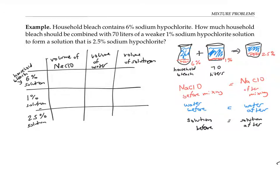Let me see which of these boxes I can actually fill in. I know that I'm adding 70 liters of the 1% solution, so I can put a 70 in the total volume of solution here. I don't know what volume of the household bleach I want to add, that's what I'm trying to find out. So I'm going to just call that volume x.